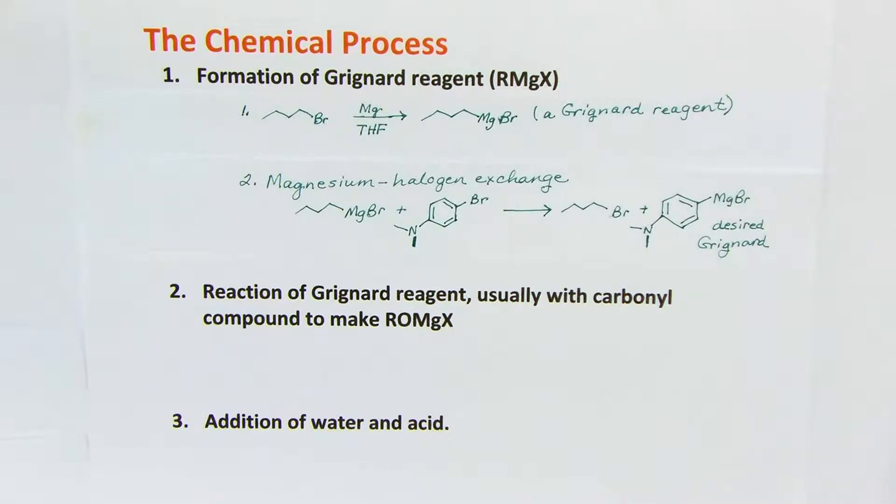But then we're going to do a magnesium halogen exchange. This is a reaction that's not in your textbook, but it's a cute trick to get the Grignard reagent we actually want, but faster.